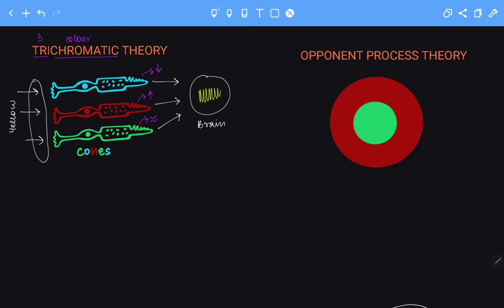So this is the trichromatic theory. This theory works just fine, but it works fine until there were a few more phenomena that it couldn't explain. Let's look at one such phenomenon that the trichromatic theory could not explain.